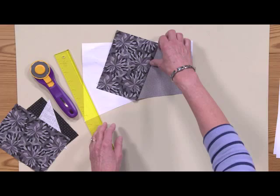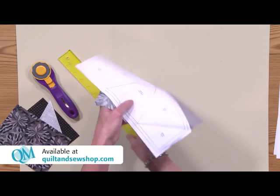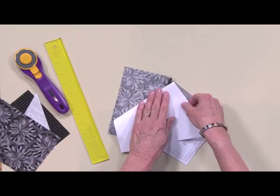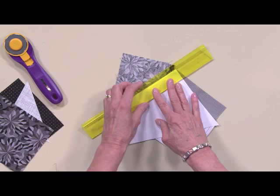I'm just going to show you how I use the add a quarter ruler to trim before I sew the next patch on. So I'll flip it over to the back, fold on the line between three and four, then line the lip of the add a quarter right with the fold, and then I can take my rotary cutter and trim the excess fabric off.